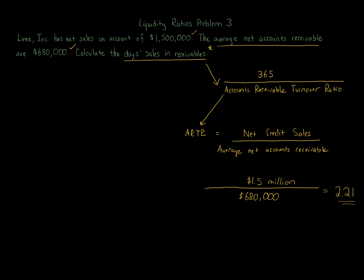That's a preliminary calculation we need to do to get our final answer. The 2.21 tells us how quickly accounts receivable are actually being collected — the higher the ratio, the better. So 2.21 is pretty good. When that number is less than 1, it becomes concerning because it means you have far more accounts receivable than you even have sales during the year.